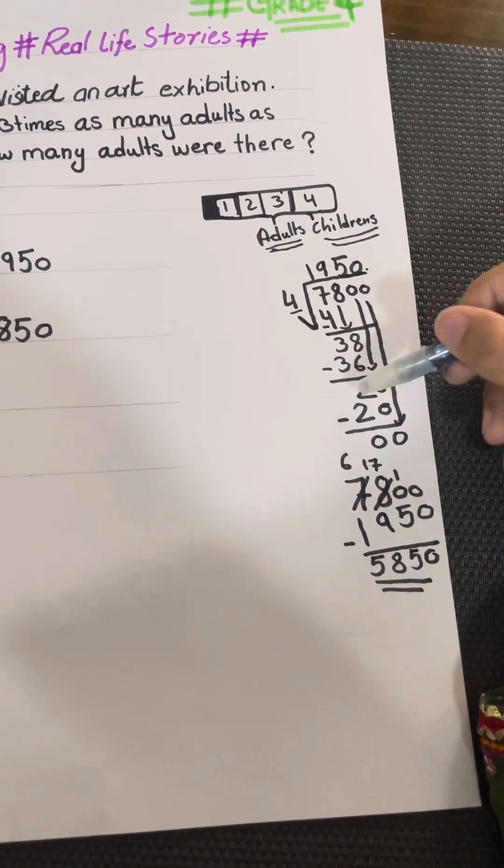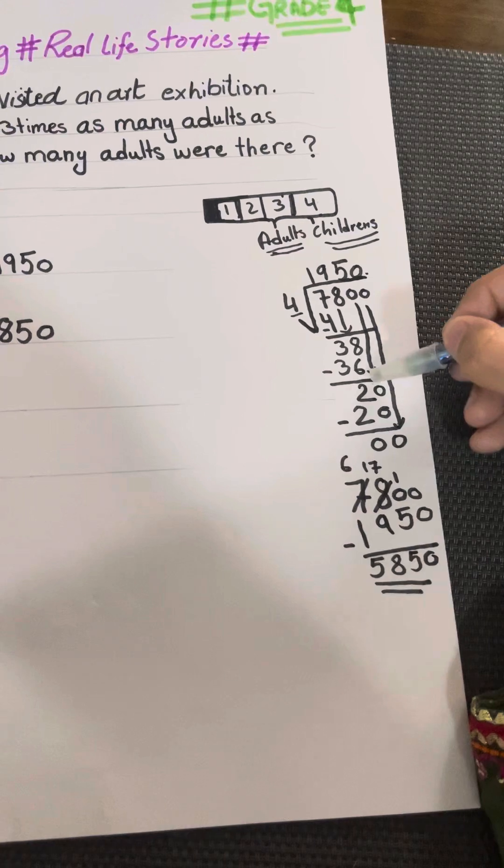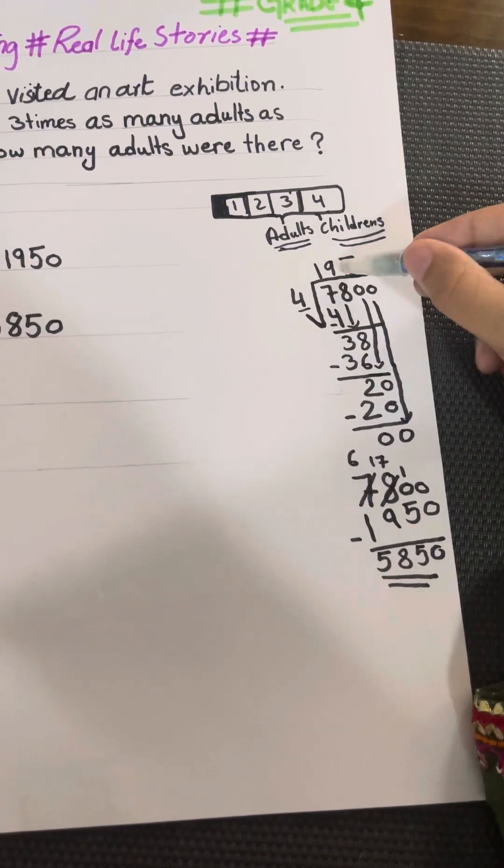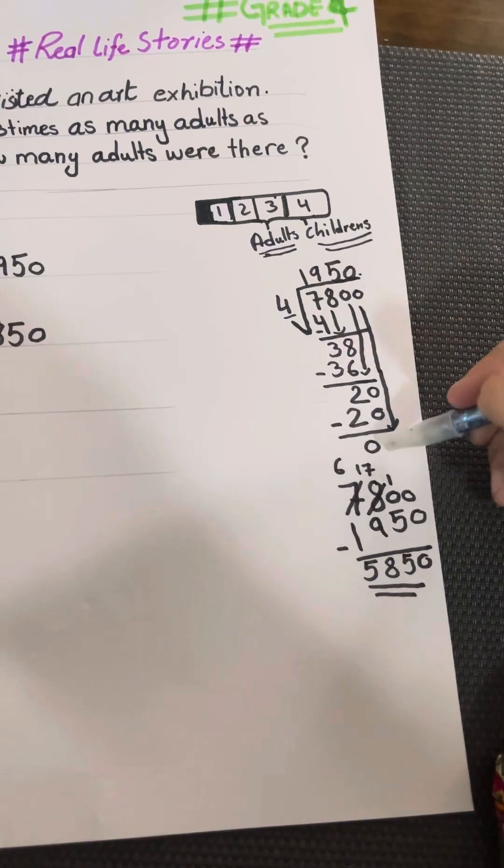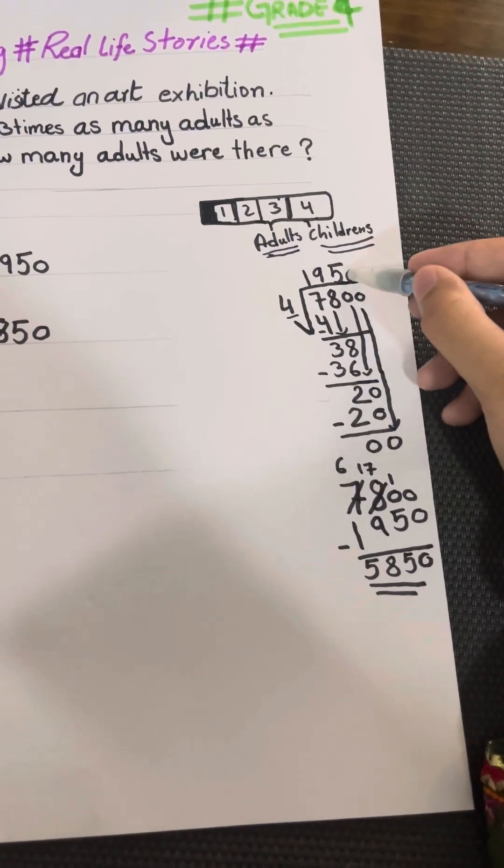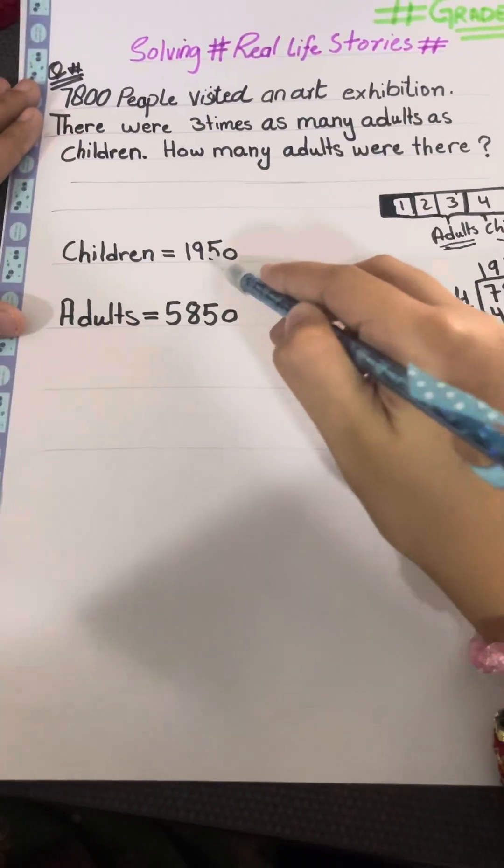Minus it and it becomes 2. Bring down 0, it's 20. 4 fives are 20, so 20 minus 20 is 0. Bring down 0. Four zeros are 0, so 0 goes here. So there are 1,950 children.